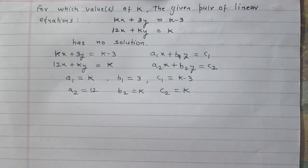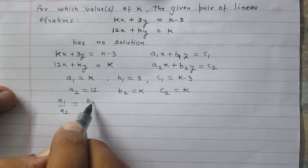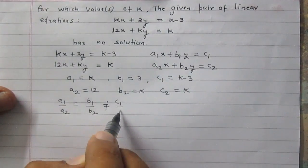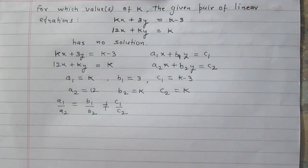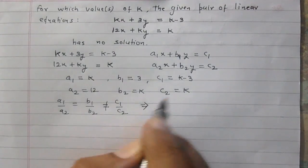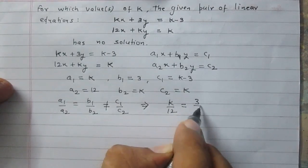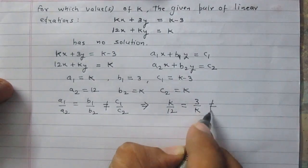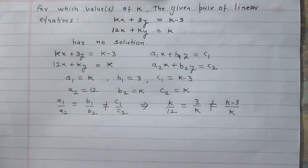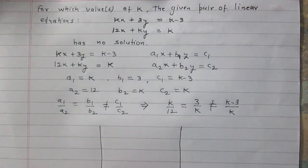For a pair of linear equations having no solution, the condition is a1/a2 = b1/b2 but they are not equal to c1/c2. Applying this condition to the given pair, we get k/12 = 3/k but they are not equal to (k - 3)/k.